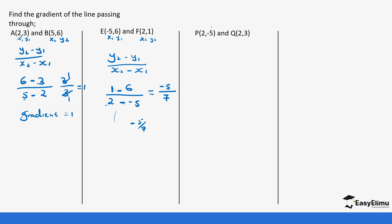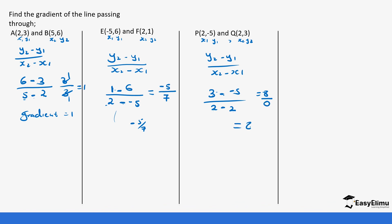Let's do another question. For points (2, -5) and (2, 3): y2 minus y1 over x2 minus x1 gives 3 minus (-5) over 2 minus 2, which is 8 over 0. Since division by zero is undefined, this confirms a vertical line has an undefined gradient.